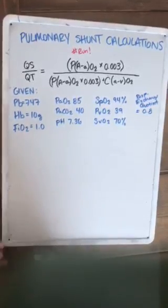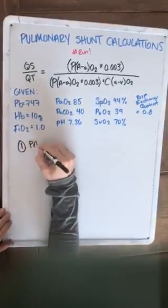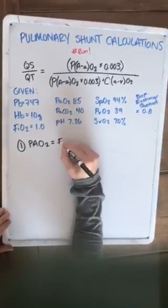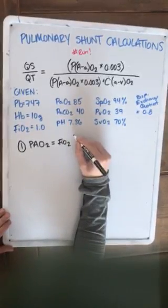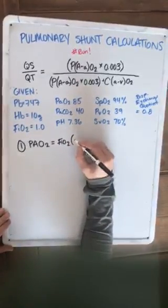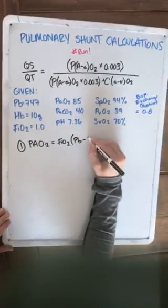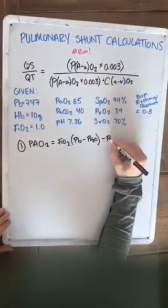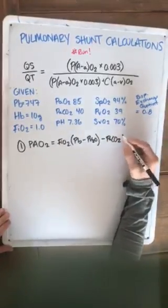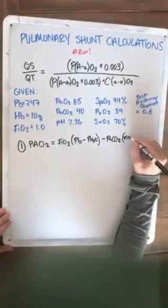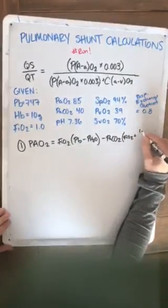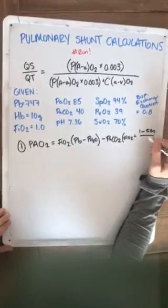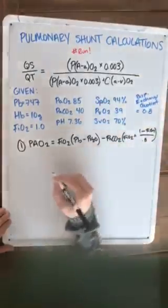P capital A O2, and this is equivalent to our FiO2 times our barometric pressure minus our water pressure minus our PaCO2, multiplied by our FiO2 plus one minus our FiO2 over our respiratory exchange quotient, which is always 0.8.